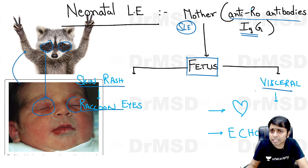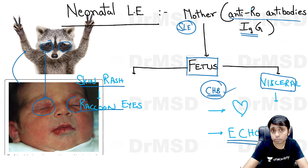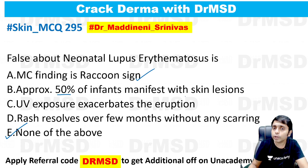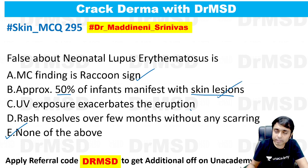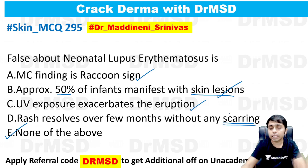The main visceral change is in the heart — congenital heart block. The risk in these neonates for congenital heart block is high, so we should always monitor these children with repeated echocardiograms. Raccoon sign is the most common finding, and approximately 50% manifest with skin lesions. Just like SLE, children also have photosensitivity to ultraviolet rays. The rash resolves over a few months with no scarring left behind. All these statements are absolutely right.